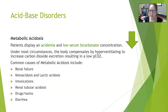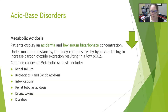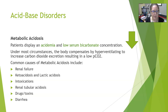Causes of metabolic acidosis include renal failure — where the kidneys can't excrete acids properly — diabetic ketoacidosis, which involves excessive accumulation of ketoacids, and lactic acidosis, which results from inadequate oxygenation or blood perfusion driving anaerobic metabolism. Other causes include intoxications, renal tubular acidosis, drugs, and toxins. Diarrhea can also cause metabolic acidosis through severe loss of bicarb.